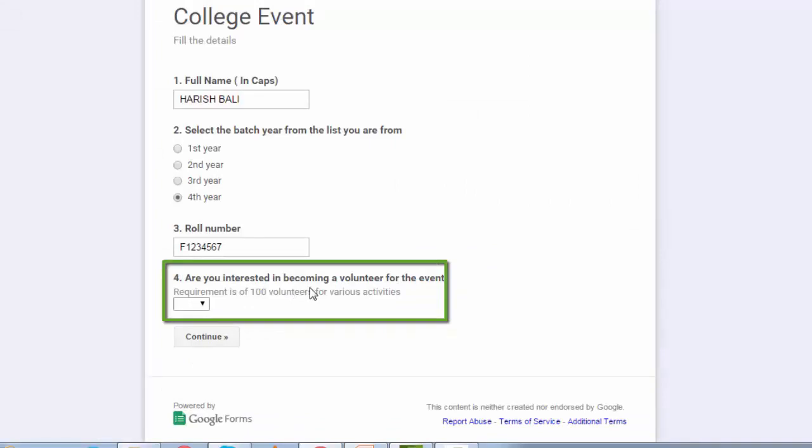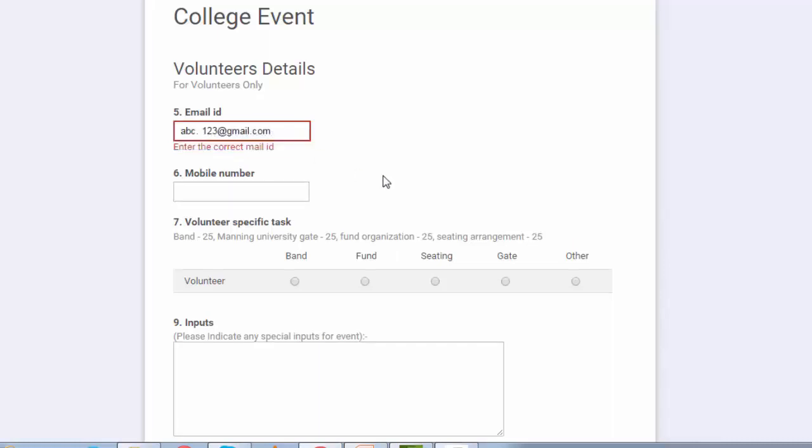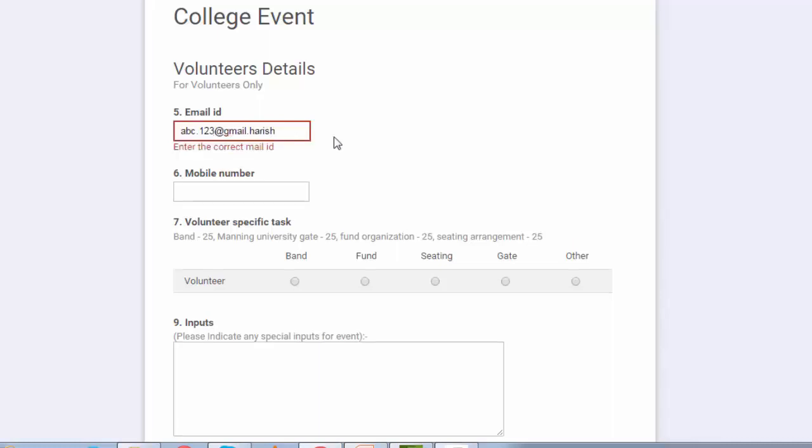Let's go back to the form. Are you interested in becoming a volunteer for the event? Yes. Continue. Let's now come to email id. Let me enter an email id abc.123 at gmail.com. It is accepting. If I put a gap between dot and 123 and then check it is showing an error or after closing this gap instead of dot com if I type at gmail.harish it is showing an error there.